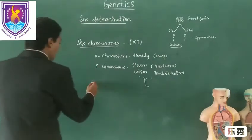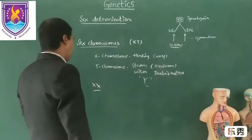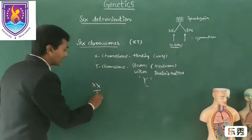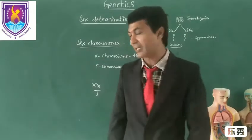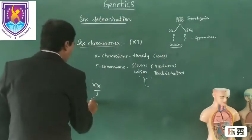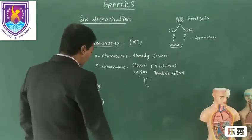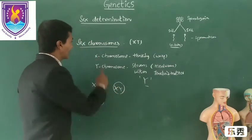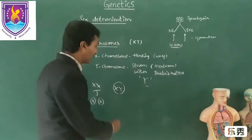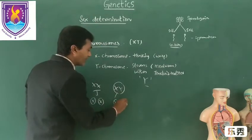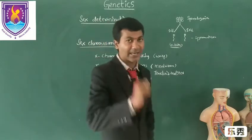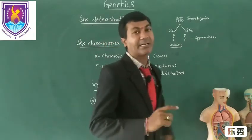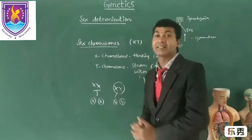If an organism possesses two XX chromosomes — two similar sex chromosomes — they are said to be homogametic, because they are able to produce the same or similar type of gametes. Whereas an organism having dissimilar sex chromosomes is called heterogametic, because they produce different types of dissimilar gametes. This is how sex chromosomes allow us to determine sex in an organism.